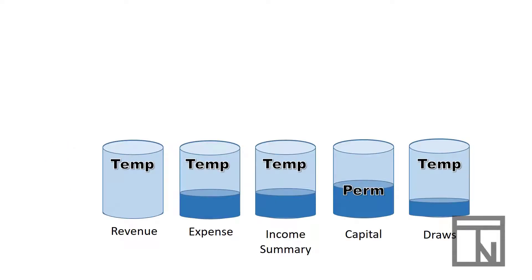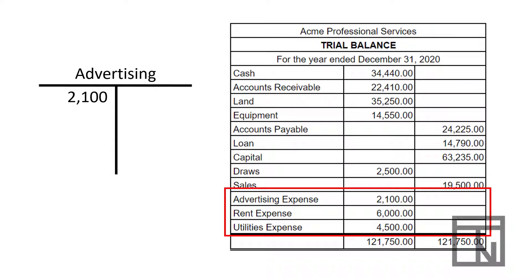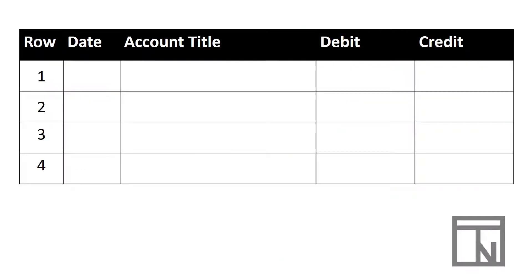Now that revenue is empty, the next step is to empty expenses into Income Summary as well. Looking at our trial balance, all accounts after revenues are expenses — in this case, advertising, rent, and utilities. Since an expense has a debit balance and needs to be zero, we use the opposite side — a credit. So using advertising as an example, that's $2,100 as a credit. Since our expense accounts are going to be credits, what they're being emptied into — Income Summary — will be the debit.